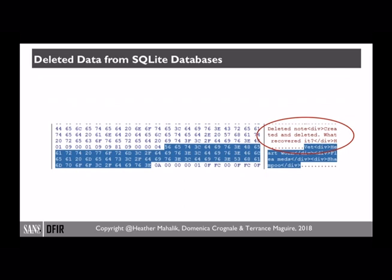SQLite databases are a container — they're going to have active information, but they're also going to contain deleted information. In this screenshot, we're looking at a table from a SQLite database in a hex editor, and we can see deleted messages. We'll emphasize in the class looking for deleted data. We'll also talk about using scripts that can automate this process and recover deleted data from the SQLite database. If you just use a SQLite viewer, you're only going to see active data and could miss deleted data in the free blocks.